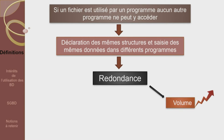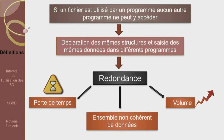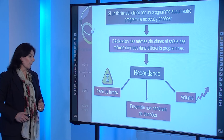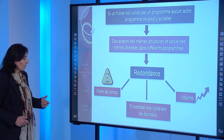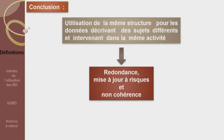Toutes les opérations de modification, de suppression, d'ajout prennent beaucoup de temps et peuvent conduire à un ensemble non cohérent de données si elles ne sont pas faites pour toutes les copies. Nous sommes donc face à un problème de redondance, un problème de mise à jour et un problème de non-cohérence, dus à l'utilisation de la même structure pour les données décrivant tous les sujets intervenant dans l'activité.